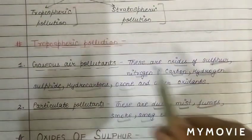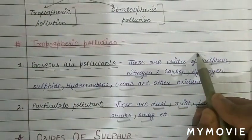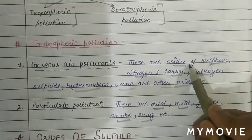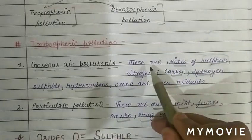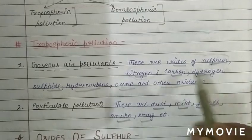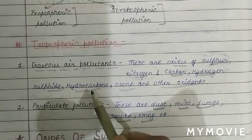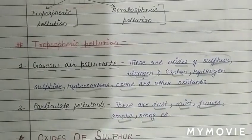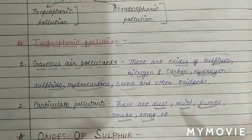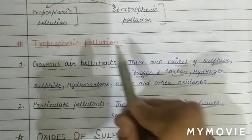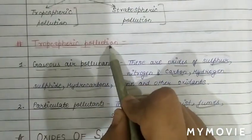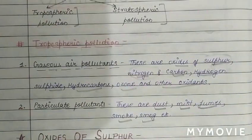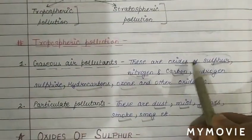In tropospheric pollution, we will first discuss oxides of sulfur, then oxides of nitrogen, then hydrocarbon, and then oxides of carbon — covering all the gaseous air pollutants.